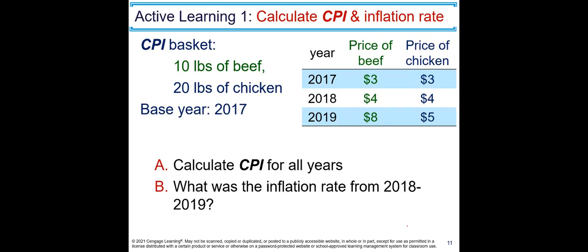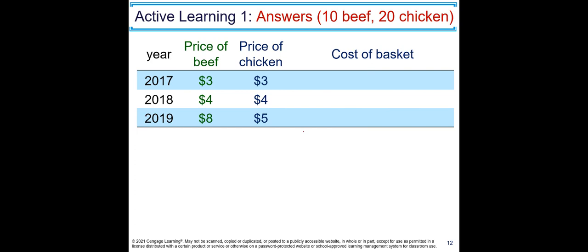Let's do one more example to confirm our understanding. The CPI basket includes 10 pounds of beef and 20 pounds of chicken. The prices of beef and chicken are given on screen and the base year is 2017. Calculate CPI for all years, then calculate the inflation rate from 2018 to 2019. Please stop the video and try on your own before continuing.